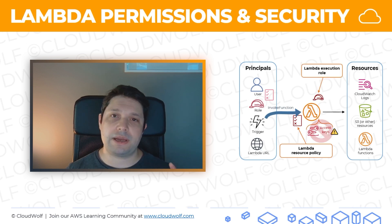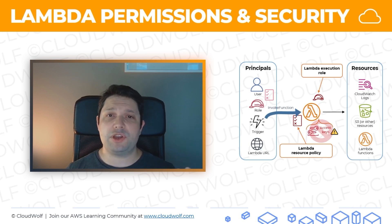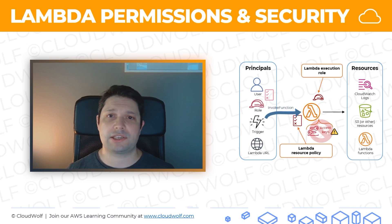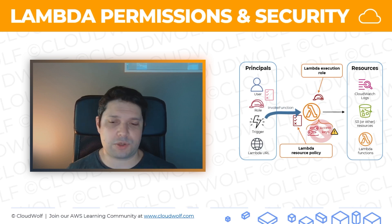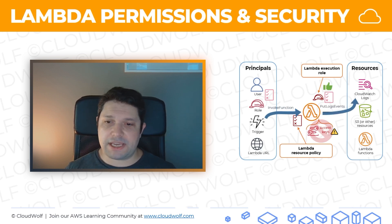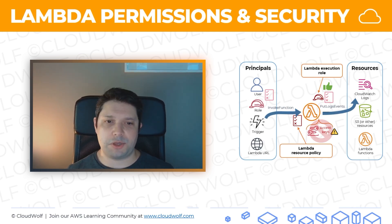Instead, what you do is attach a Lambda execution role. This is a role used by your Lambda function to give it the appropriate permissions. If you're using CDK, this will be created for you. AWS also has a service called AWS SAM, which is used for creating serverless workflows and will also create the Lambda execution role and assign appropriate permissions for you. You can do it manually as well. This will allow you to log things and do whatever else you need.